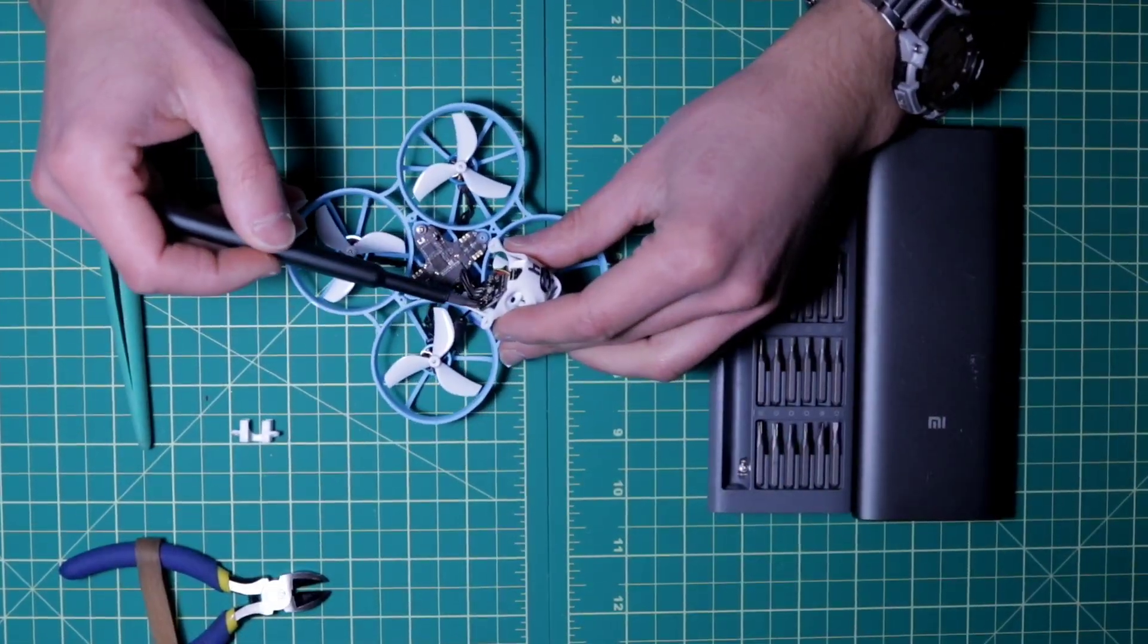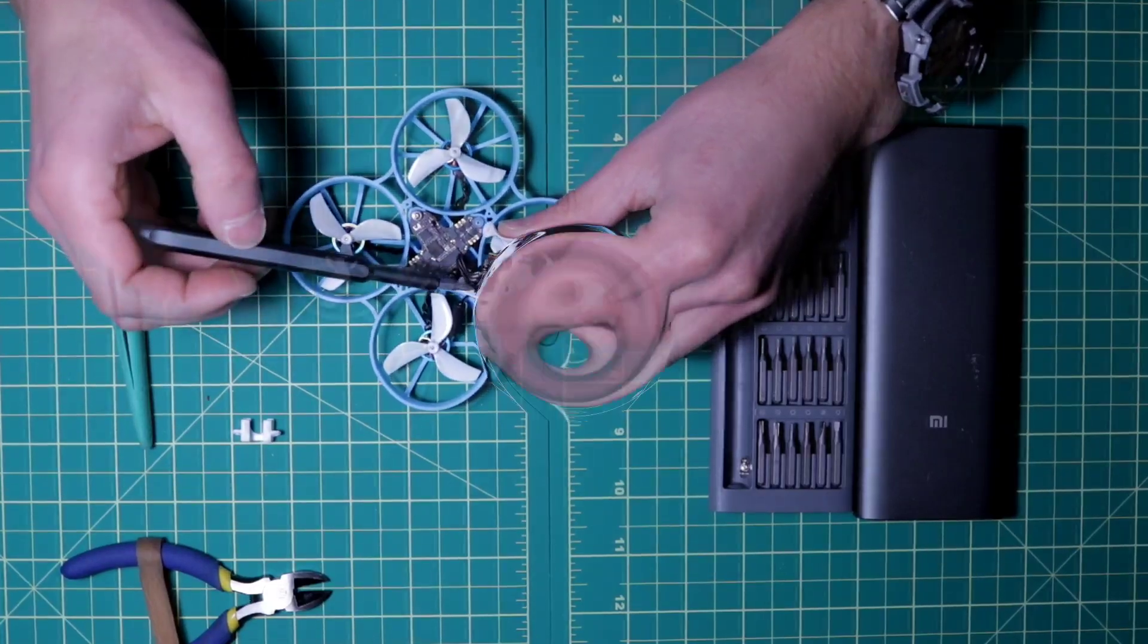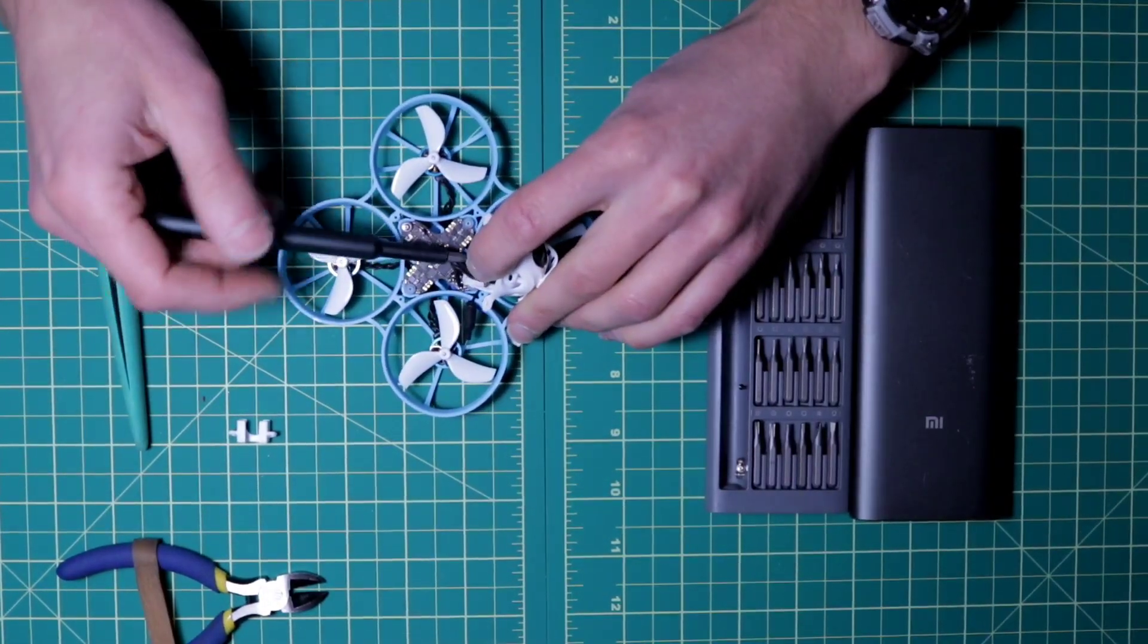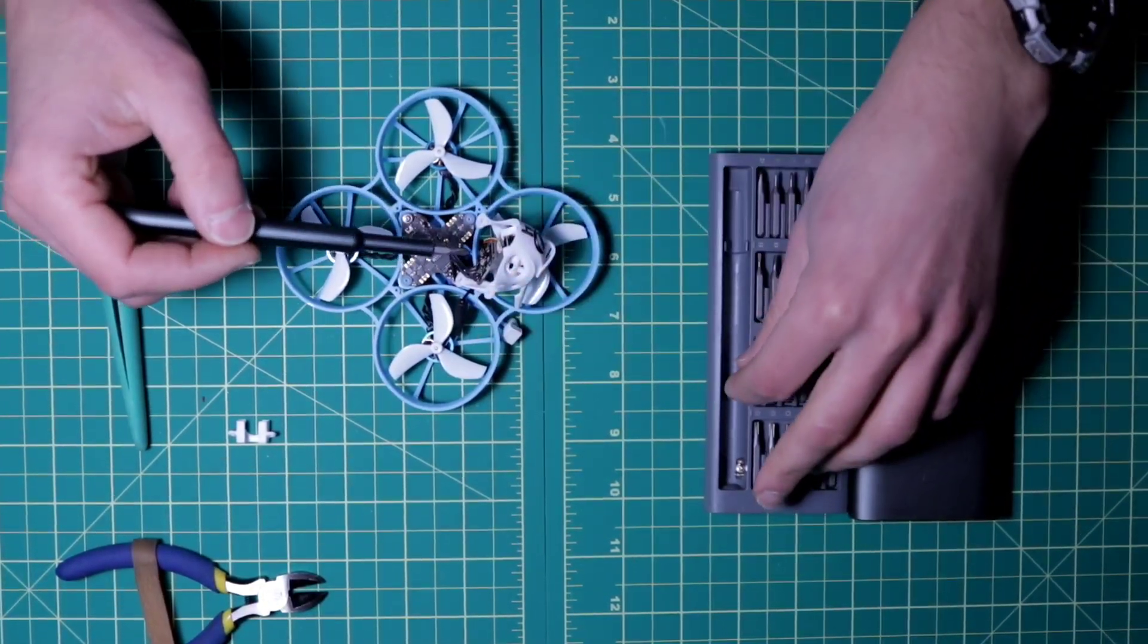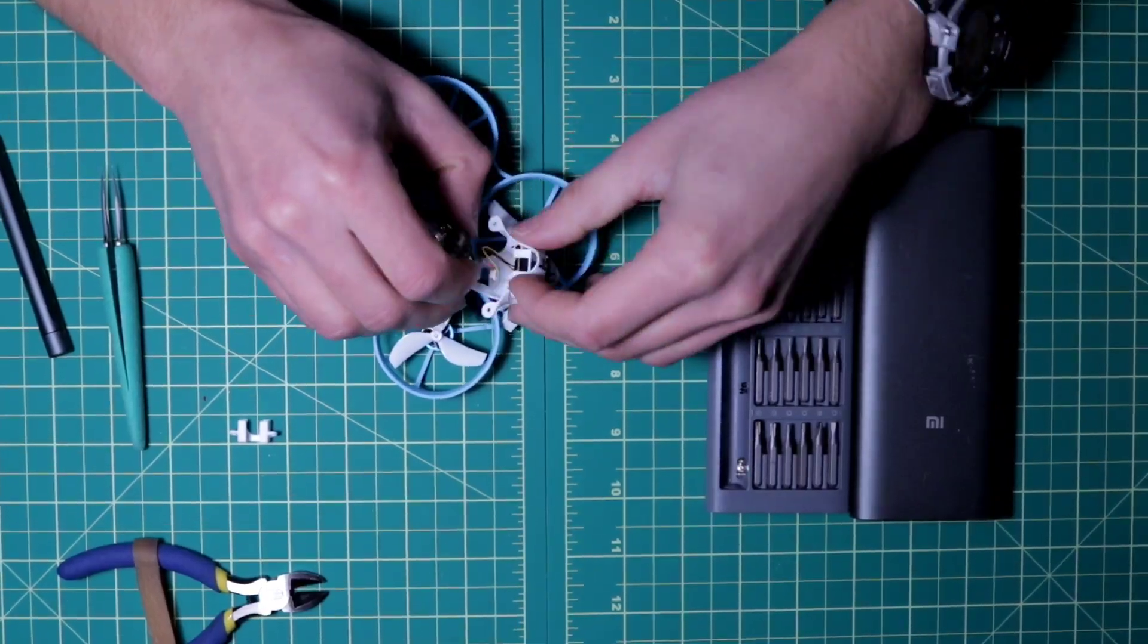Now we have to loosen two screws on VTX transmitter. I speed up video four times. If you want to make it slower, just slow the video. We unplug camera from VTX transmitter. Canopy with camera separately.